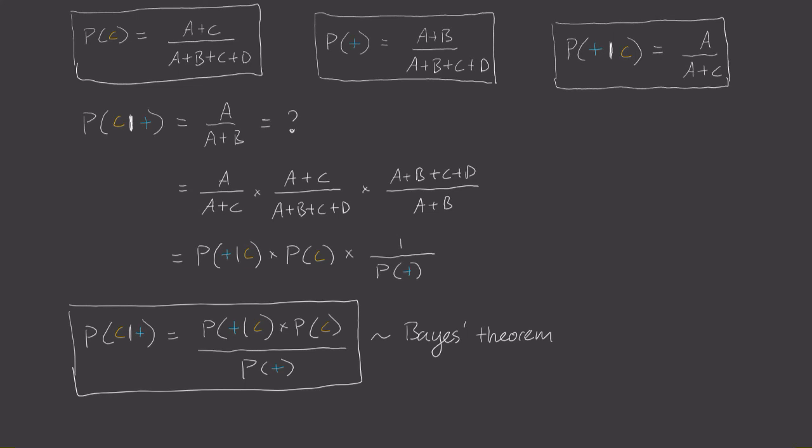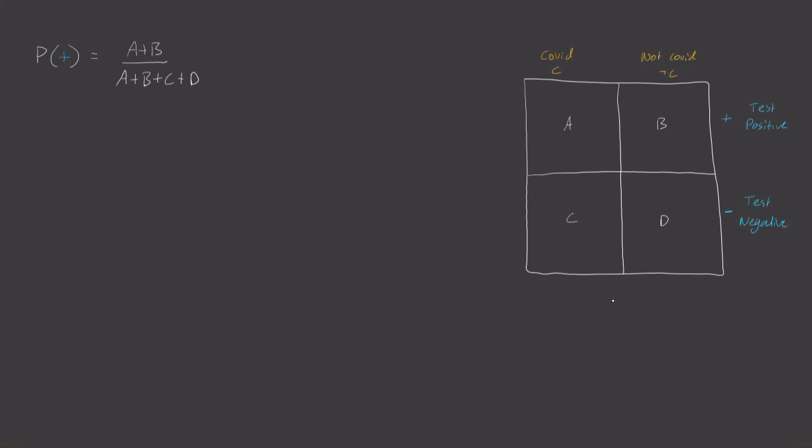But we don't have to stop there. Sometimes it's useful to find another expression for the denominator. So how can we rewrite the probability of selecting someone who's tested positive? Well, we can write this fraction as A divided by the total number of people plus B divided by the total number of people. And if we wanted to, we can write this expression as this.